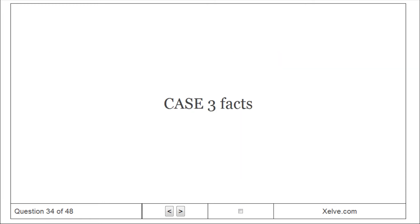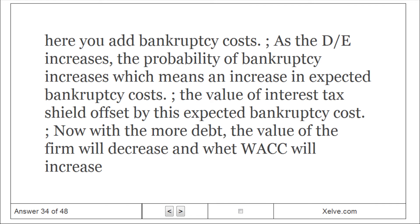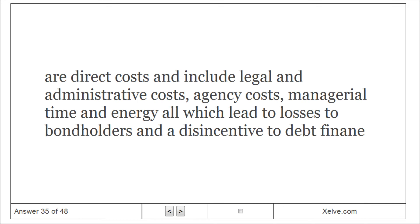Case 3 facts: Here you add bankruptcy costs. As the debt-to-equity ratio increases, the probability of bankruptcy increases, which means an increase in expected bankruptcy costs. The value of the interest tax shield is offset by the expected bankruptcy cost. With more debt, the value of the firm will decrease and WACC will increase. Bankruptcy costs are direct costs and include legal and administrative costs, agency costs, and managerial time and energy, all of which lead to losses to bondholders and a disincentive to debt financing.